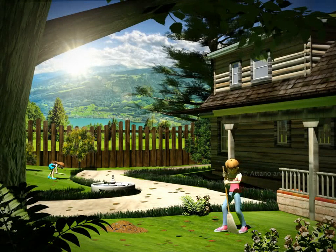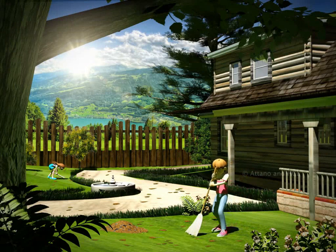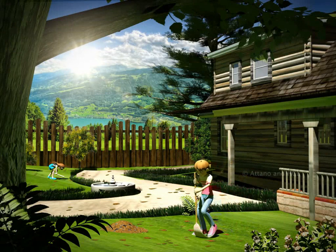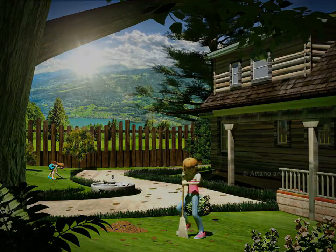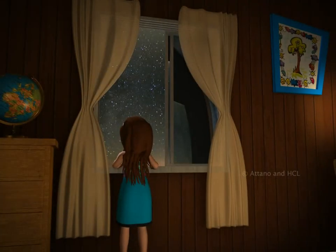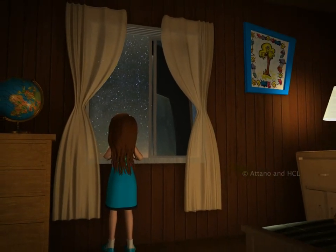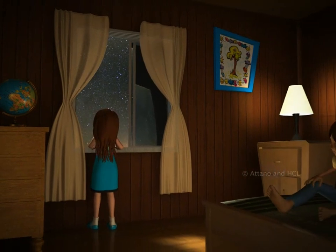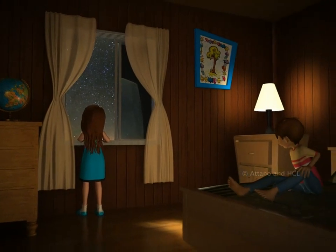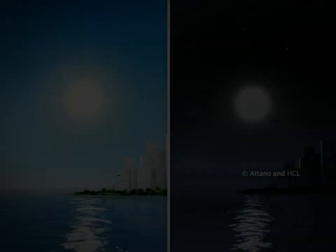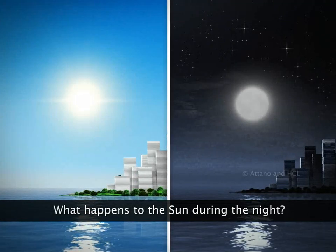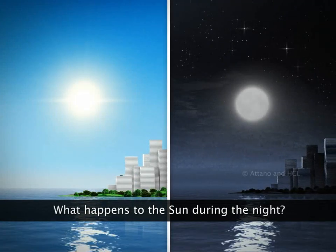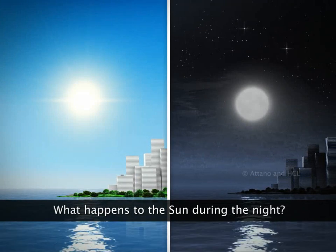You know that the earth receives heat and light from the sun during the day. But during the night, everything is dark and it gets cooler. What happens to the sun during the night? Where does it go?